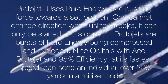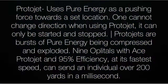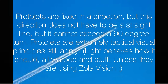Proto-jet uses pure energy as a pushing force towards a set location. One cannot change direction while using proto-jet — it can only be started and stopped. Proto-jets are bursts of pure energy being compressed and exploded. Nine oplotals with ace proto-jet and 95 efficiency at its fastest speed can send an individual over 200 yards in a millisecond. Proto-jets are fixed in a direction, but this direction does not have to be a straight line and cannot exceed a 90-degree turn. Proto-jets are extremely tactile; visual principles still apply.